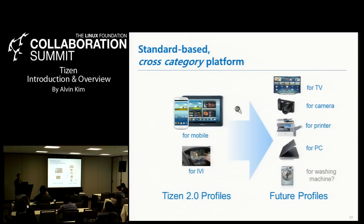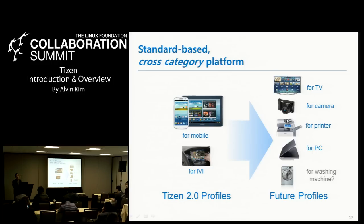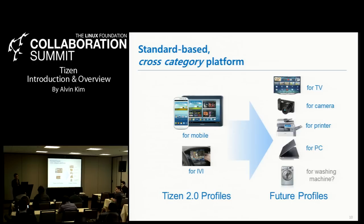What is a cross-category platform? We have recently released Tizen 2.0, the SDK and source codes. As of Tizen 2.0, there are two profiles — for mobile and for IVI. We will extend the device category to TV, camera, printer, PC, and more. These will be future profiles.